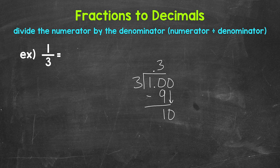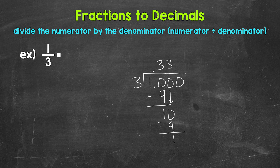10 divided by 3. How many whole groups of 3 in 10? Well, 3. Let me extend this division bar. So we put 3 up here. Multiply: 3 times 3 is 9. Subtract: 10 minus 9 is 1. We bring down another 0, and we get 10 again. You may notice that we have a pattern here — this is going to repeat over and over and give us a repeating decimal.